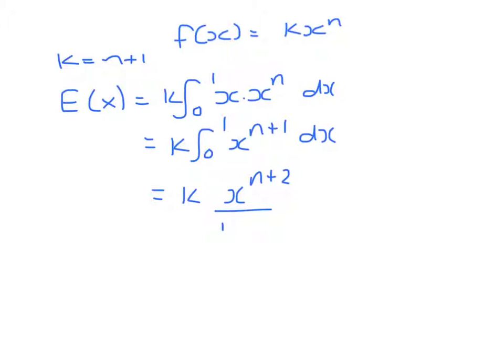we get n plus 2 and divide by the new power n plus 2, between 0 and 1. So this is k times 1 over n plus 2, and k is n plus 1, so it's n plus 1 over n plus 2.